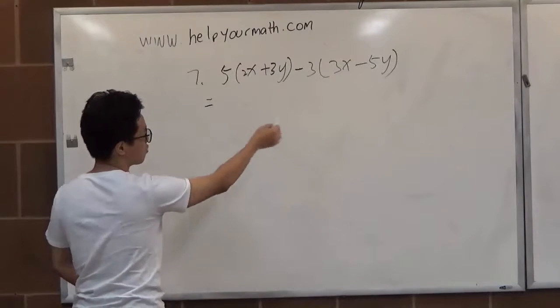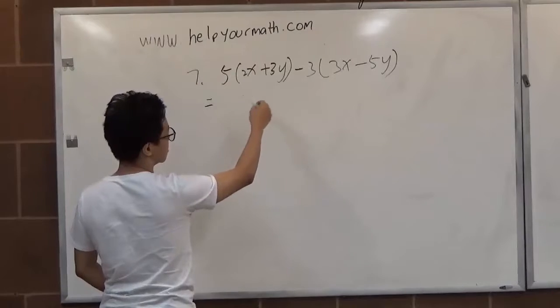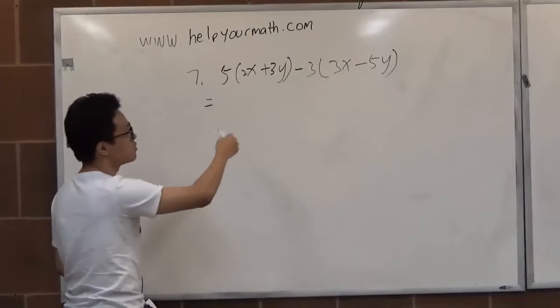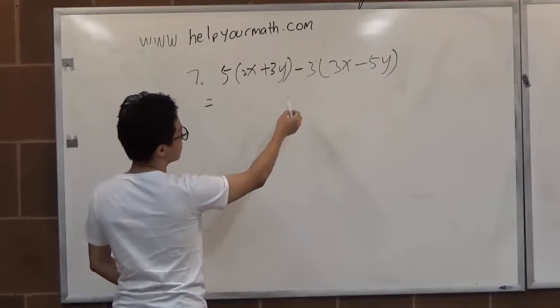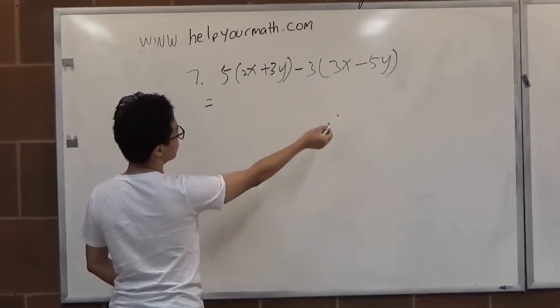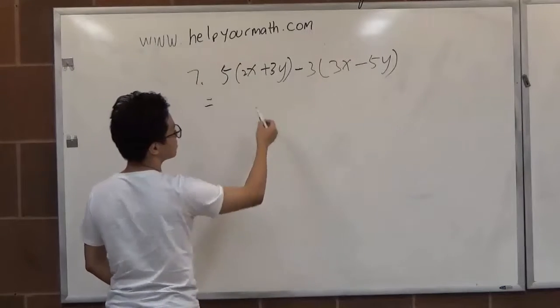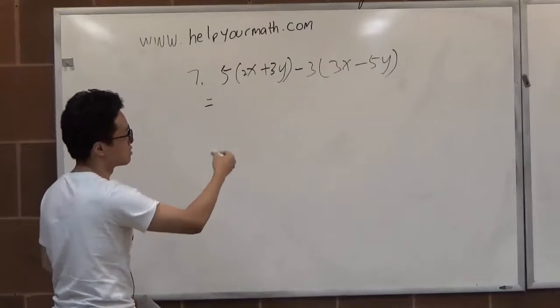First, we look at the question. Because there are two parentheses, we have to deal with the parentheses first. Inside the parentheses, there are two different variables, x and y, so we cannot do anything inside the parentheses.